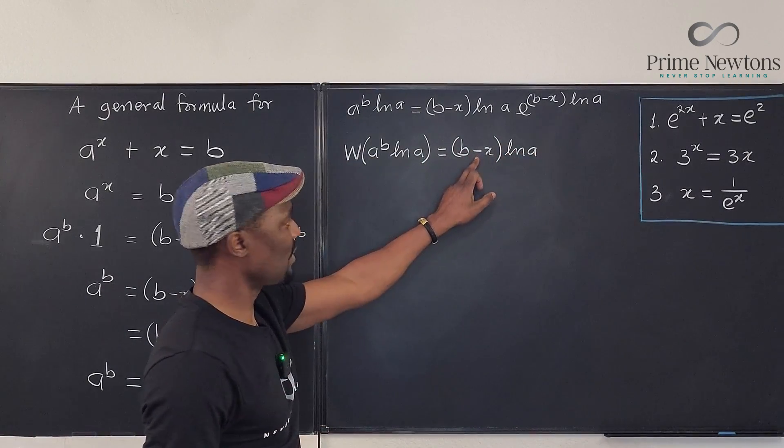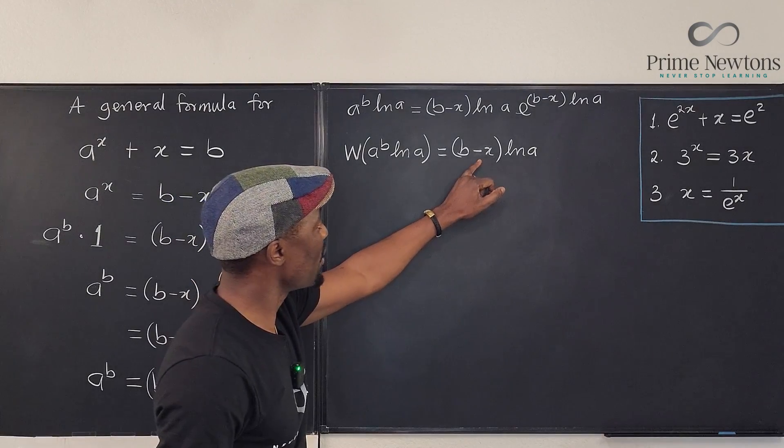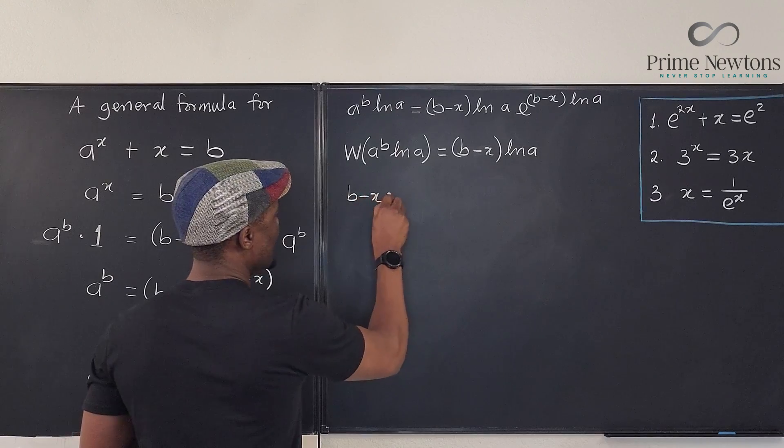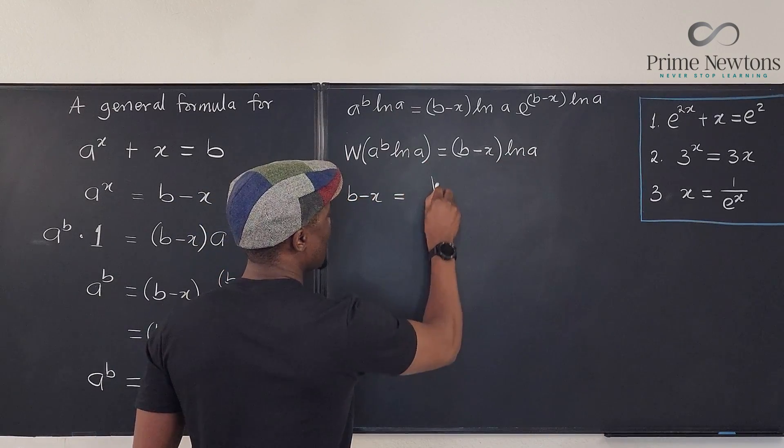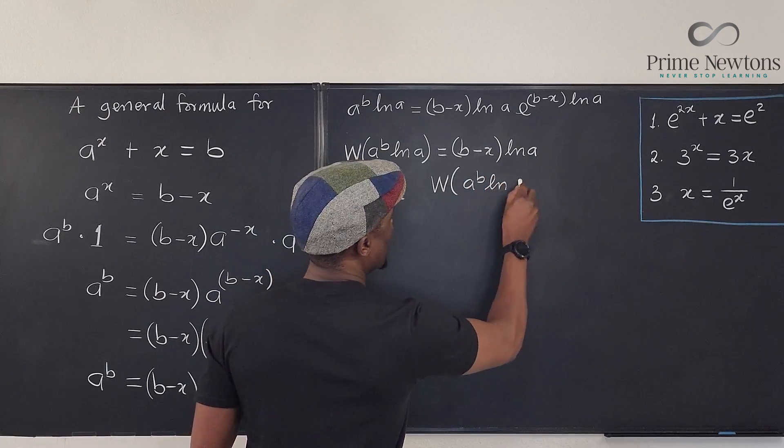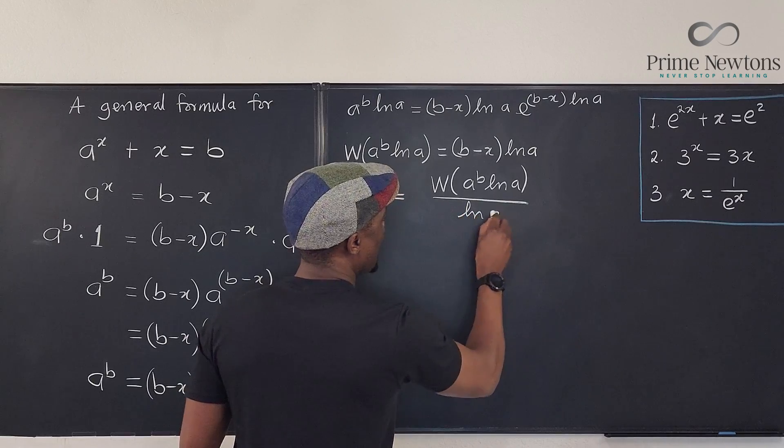So if I just want to isolate, this is the only term containing x. The only part containing x. So I'm going to isolate b minus x. So I have b minus x will be equal to this divided by this, which is going to be the w of a to the b ln of a divided by ln of a.